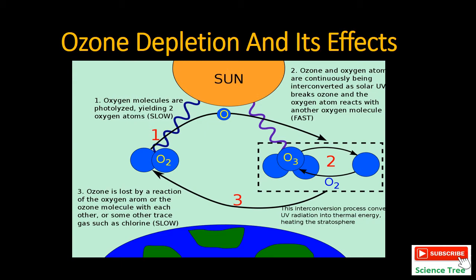Basically, ozone is an allotropic form of oxygen. The word allotropic means that one element can exist in more than one type. Oxygen molecules are split, yielding two oxygen atoms — it is a slow reaction — and when these oxygen atoms combine with oxygen molecules, they form the ozone layer.